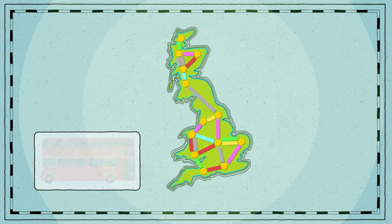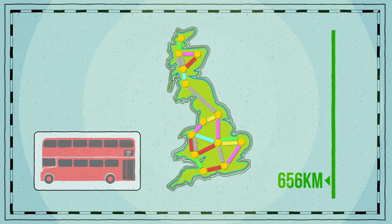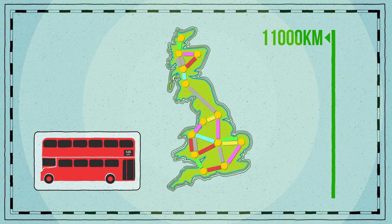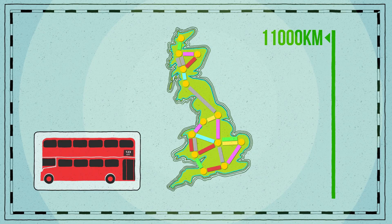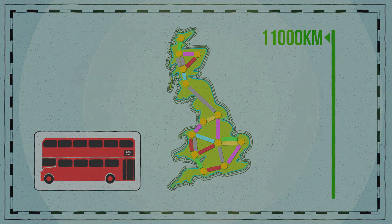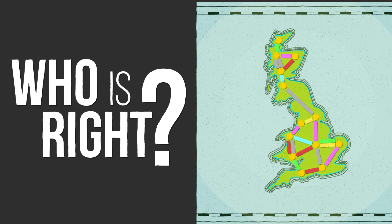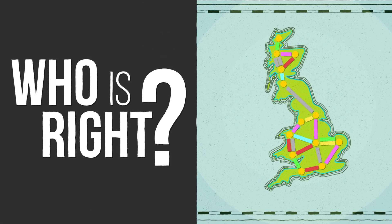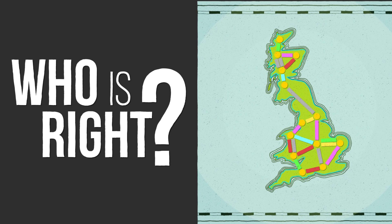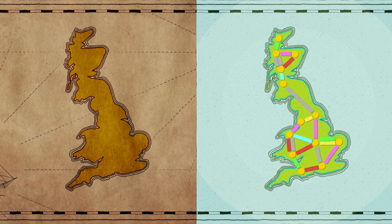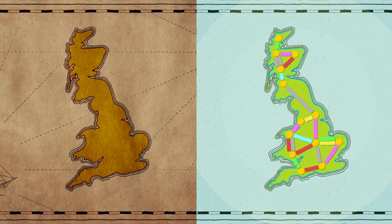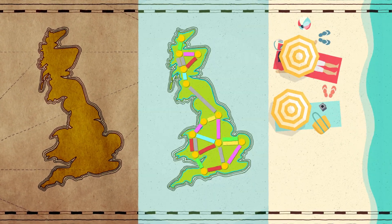Ask a bus driver and they may give us a measure that is more than twice what the captain said. Who is right — the bus driver who measured the coastline based on fuel consumption, or the captain using a nautical chart to predict the duration of their journey?